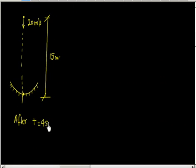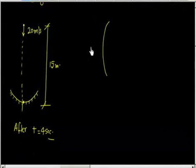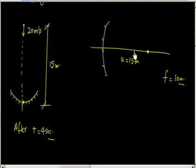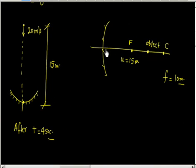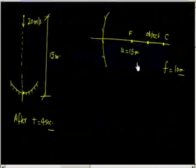Now we need to find the image at this point. The object is at u = 15 meters. f is given as 10 meters. The object is between the focus and the center of curvature of the concave mirror. People call this the ball since the question says a ball has been dropped.